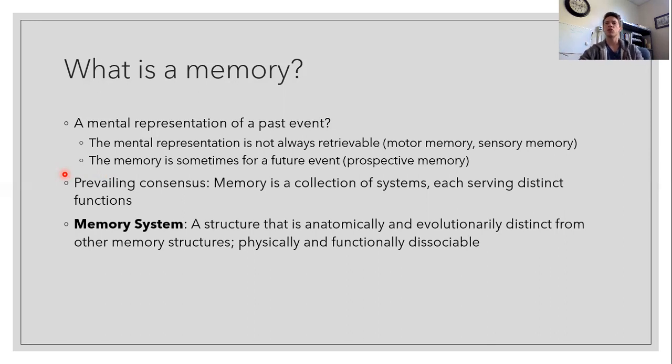So a memory system is simply a structure that is anatomically and evolutionarily distinct from other memory structures. And simply what this means is that it's both physically and functionally dissociable, physically in that different neural structures underlie each of the different types of memories, which we'll review in a moment, and functionally meaning that each of the different types of memory serves a different purpose.